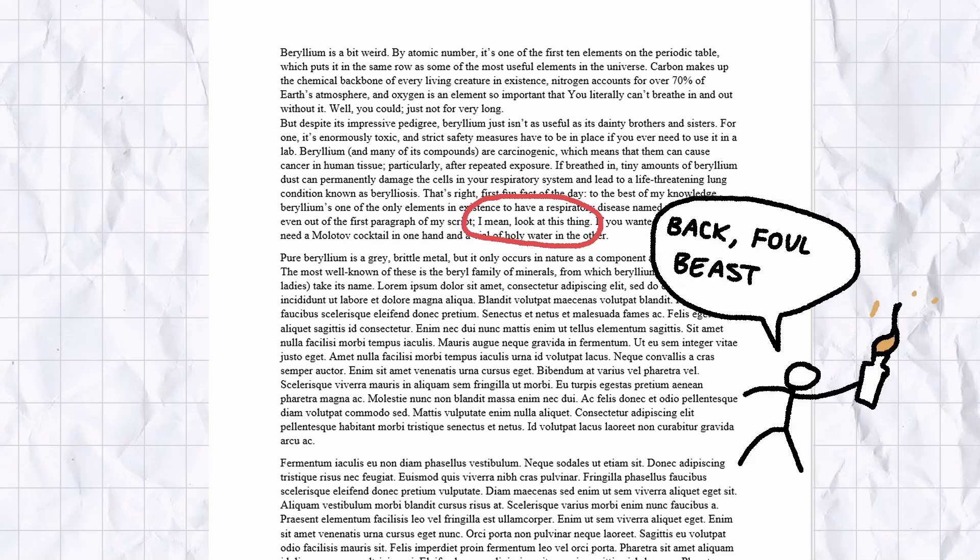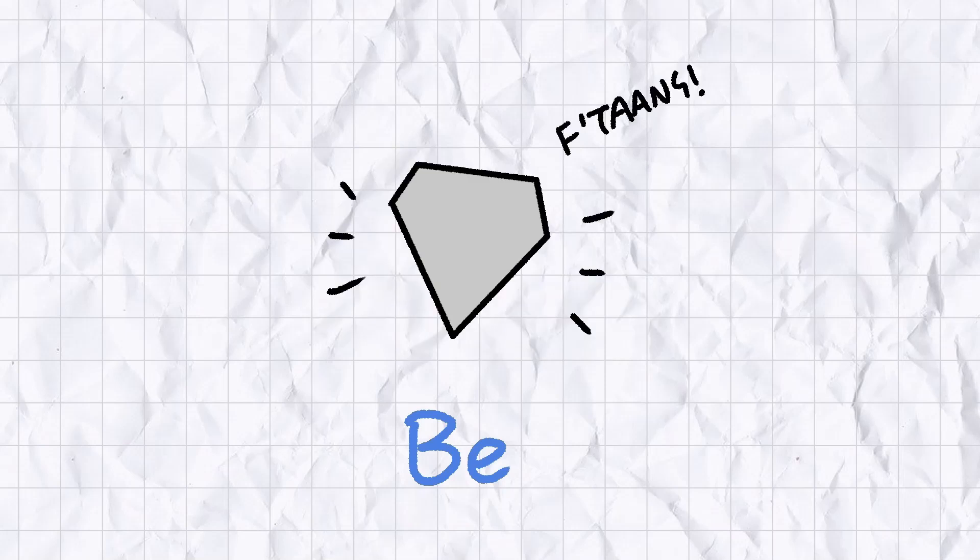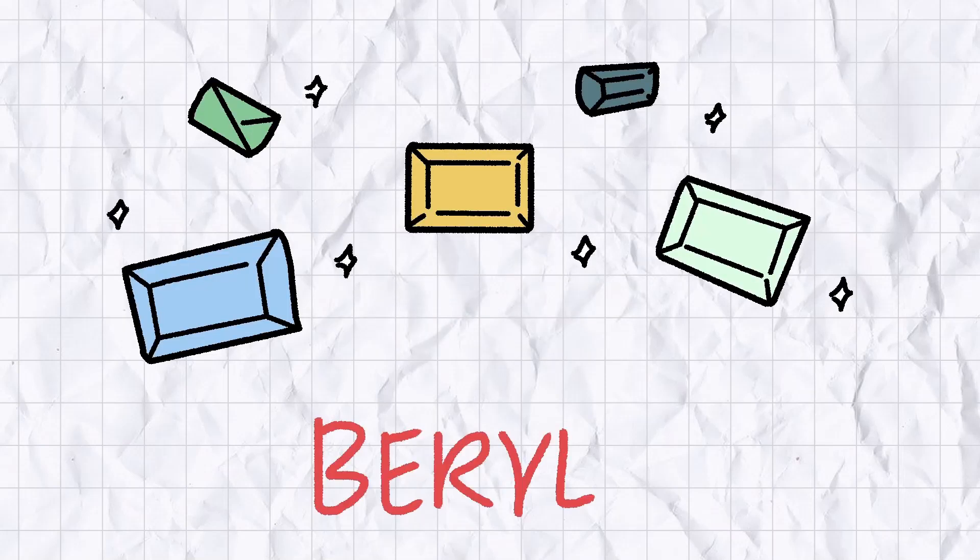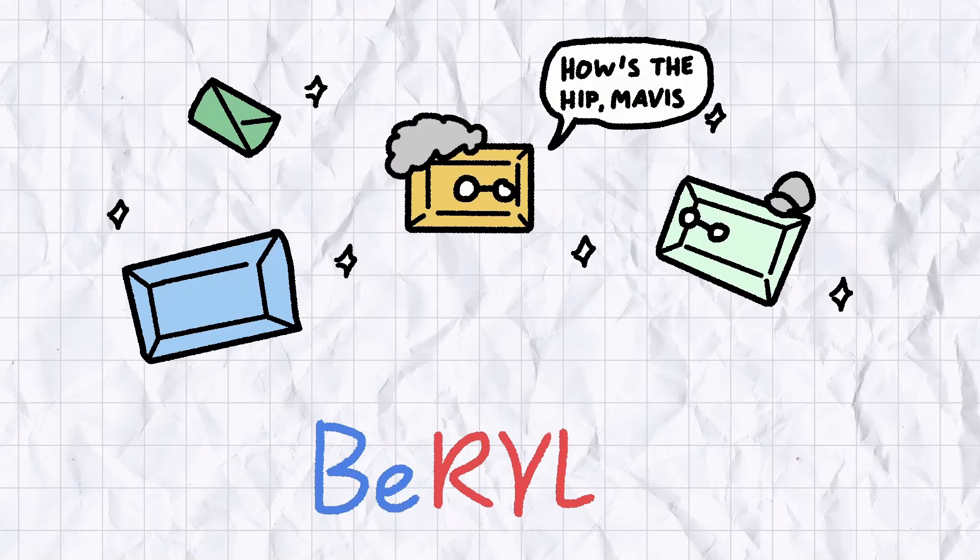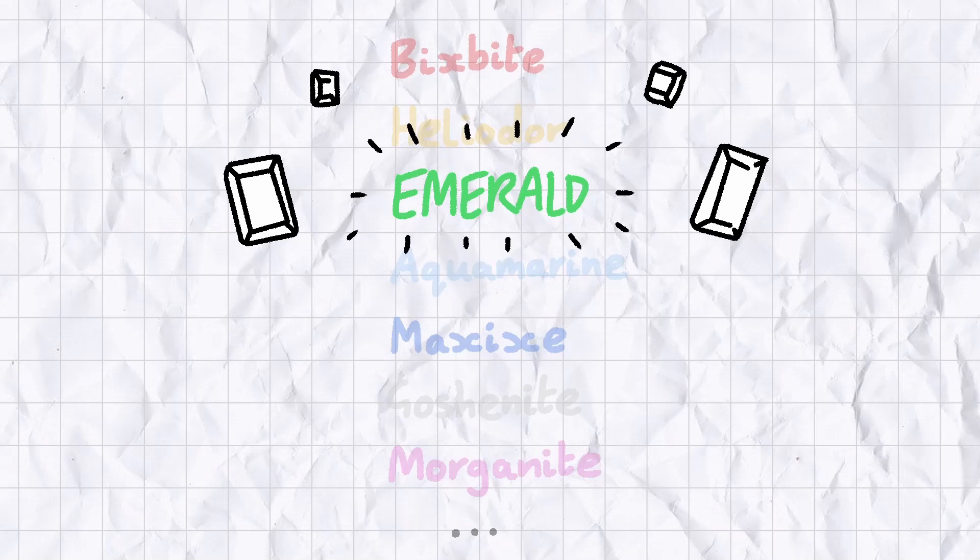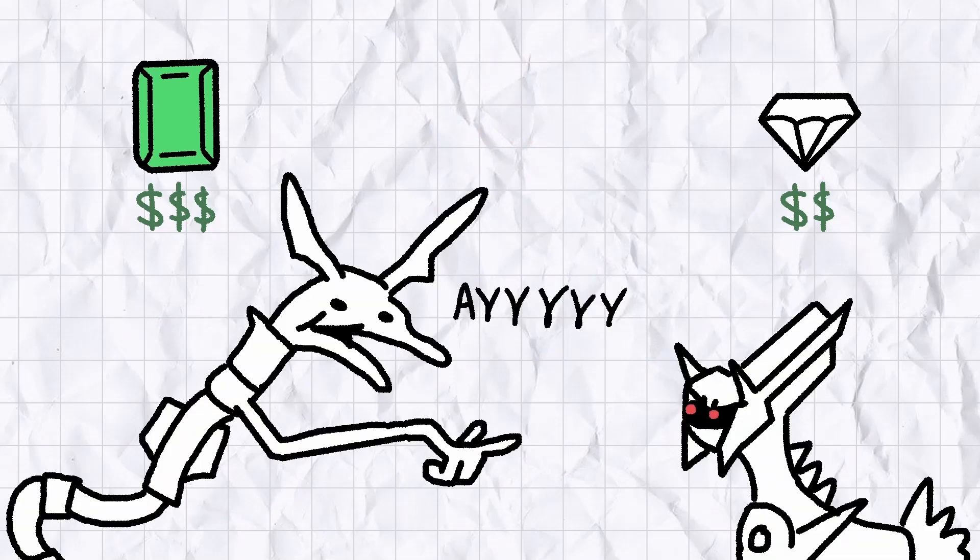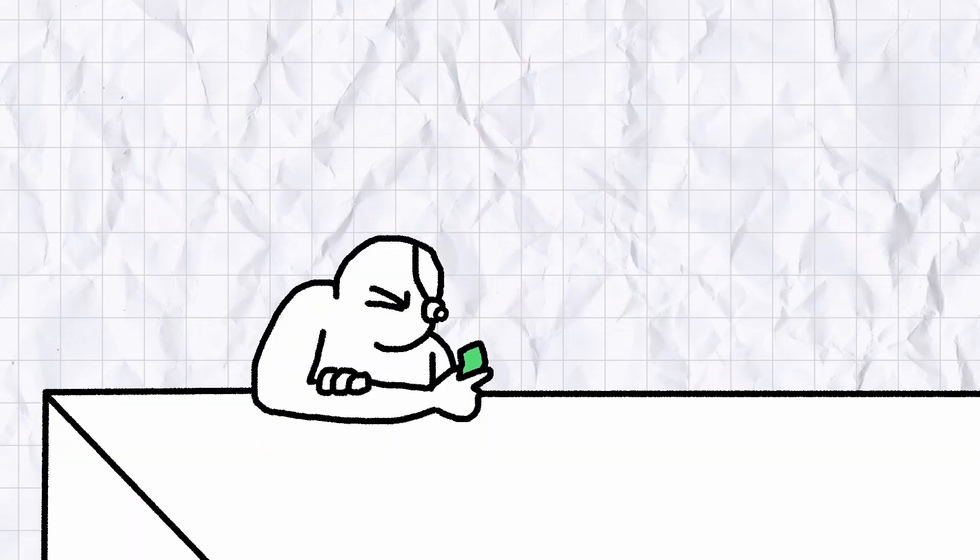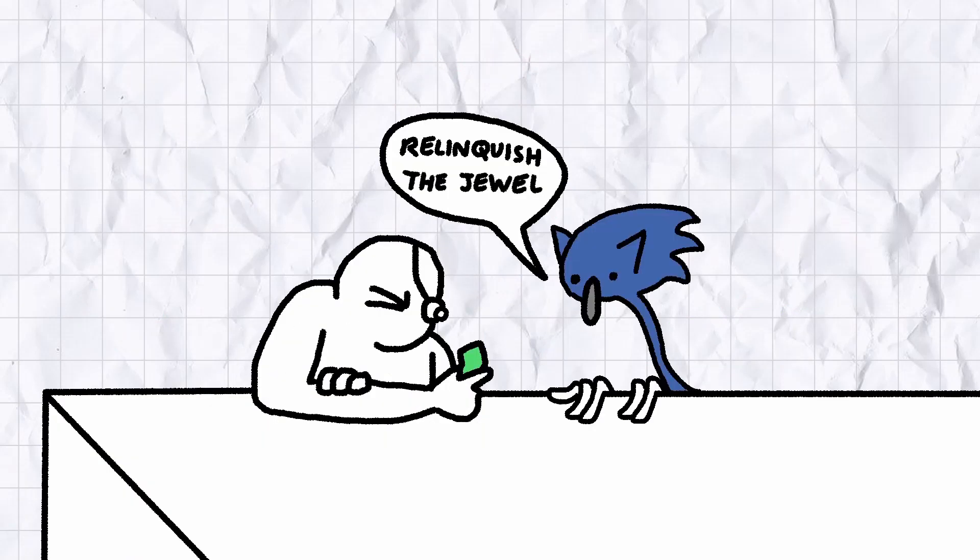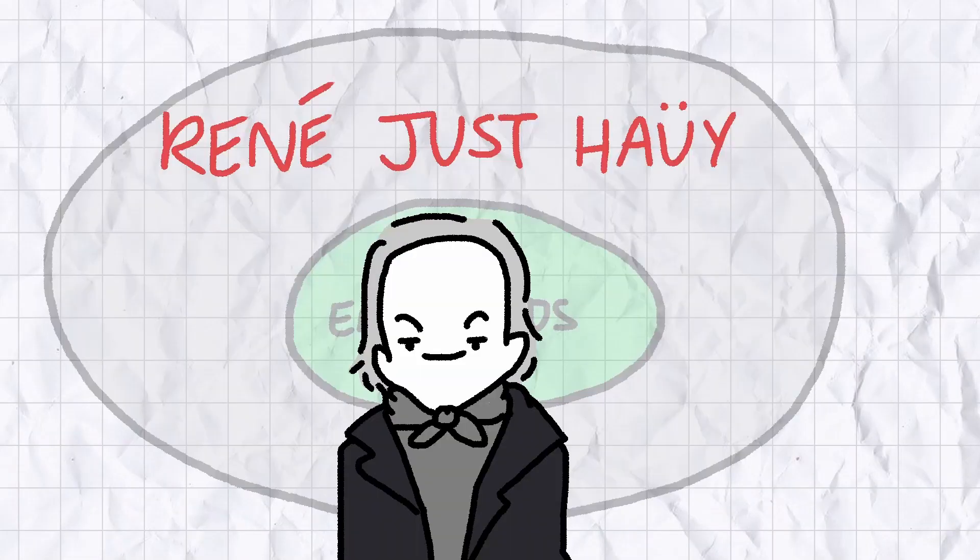Pure beryllium is a grey, brittle metal, but it only occurs in nature as a component atom in crystals. The most well-known of these is the beryl family of minerals, from which beryllium takes its name. There are many different types of beryl, but the ones we'll be focusing on are the emeralds, gemstones renowned for their brilliant green colour, which comes from trace amounts of chromium and vanadium in their chemical structures. Gram for gram, emeralds are rarer on earth than diamonds and have been coveted by both jewellers and anthropomorphic hedgehogs since the time of the ancient Egyptians.